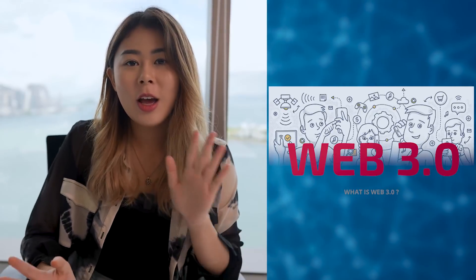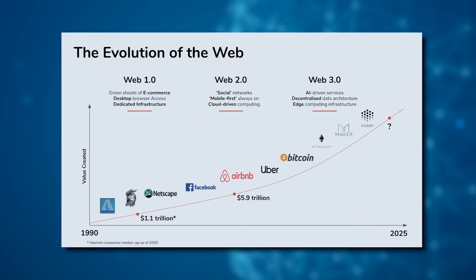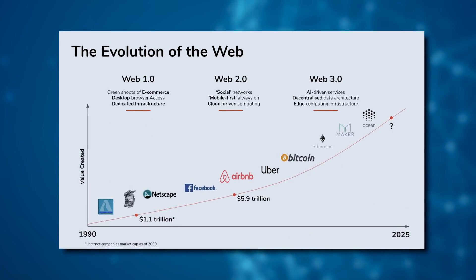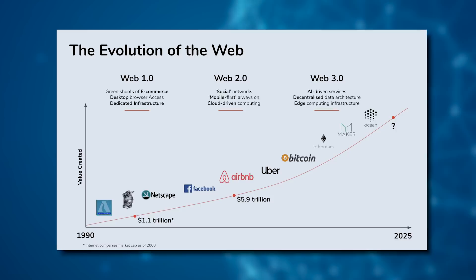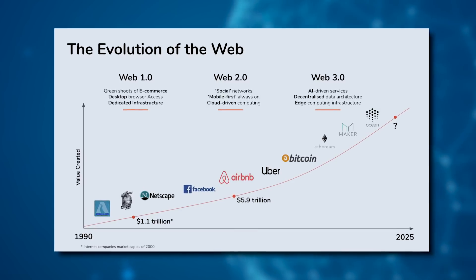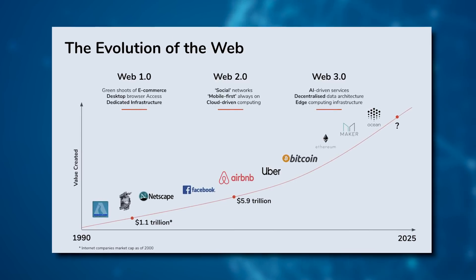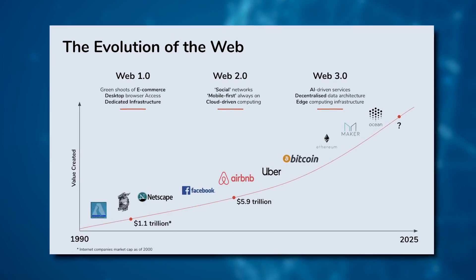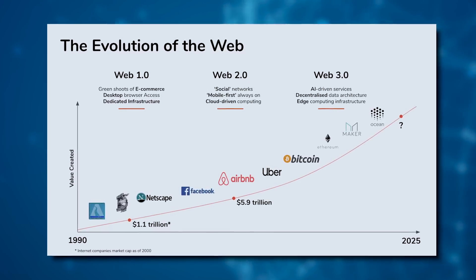What is Web 3? Web 3 is the next stage of the web evolution that will rely on decentralized technologies such as peer-to-peer networking, personal clouds, and distributed data storage.